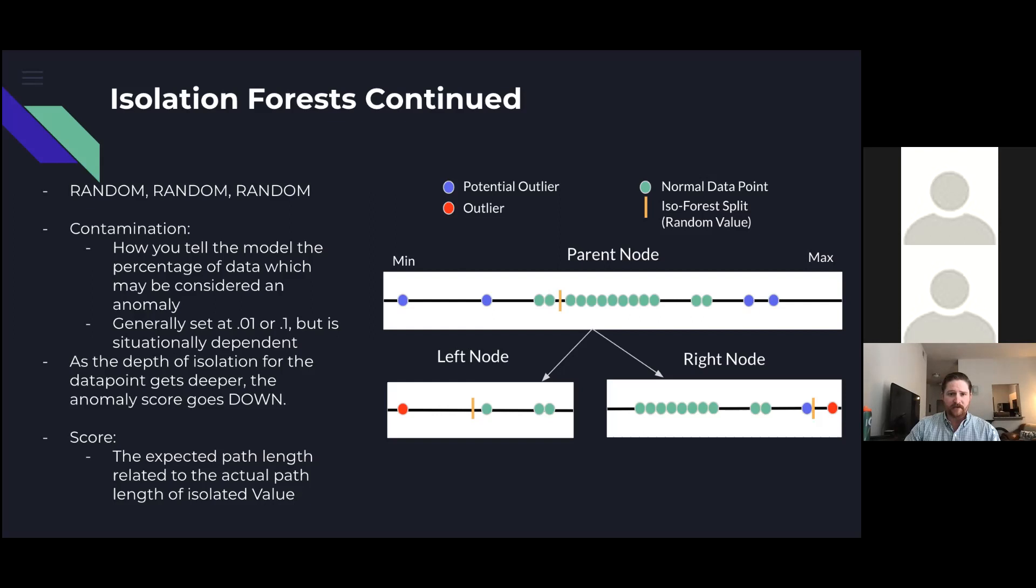As you can see in the left and right nodes, the red data points are isolated away from the other data points by these random splits. With all this in mind, let's get to our data and use an isolation forest to detect the anomalies.